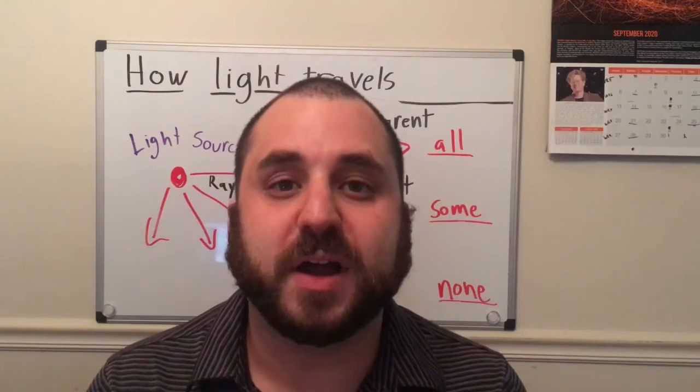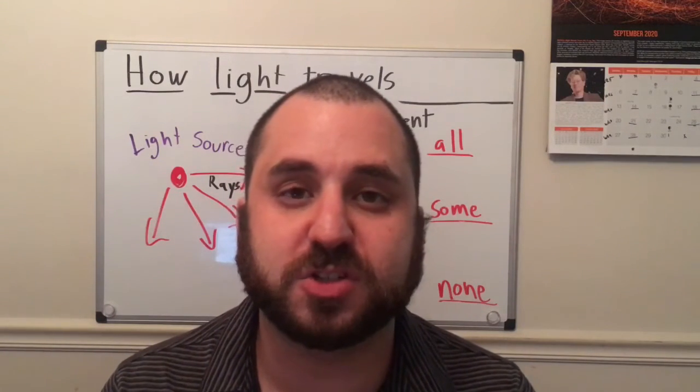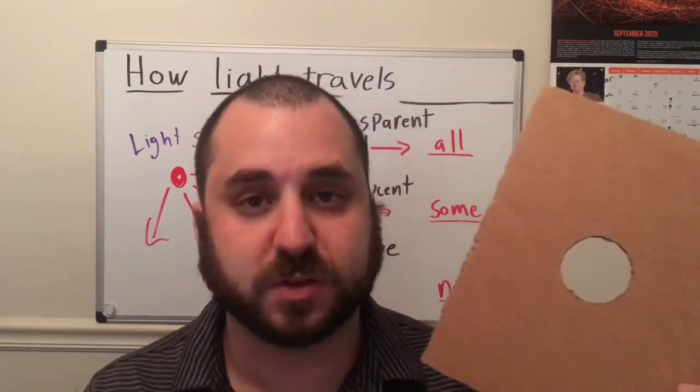Now let's talk about our conclusions. Can you describe what happened when the light changed position both with and without the three holes in the way?